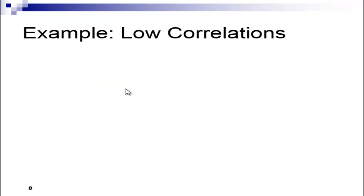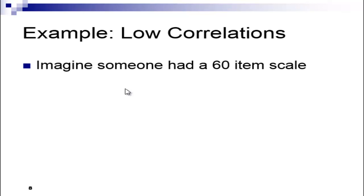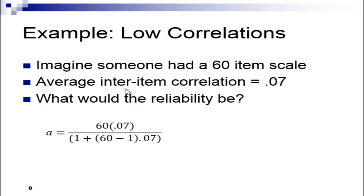To emphasize the impact of the number of items on internal consistency reliability: imagine someone with a 60-item scale and the average inter-item correlation is really quite low—.07. What would the Cronbach's alpha estimate be? If I solve the formula, it works out to .82. That's quite high: 82% of the variance is considered reliable, even though there's quite a low average correlation between the items.